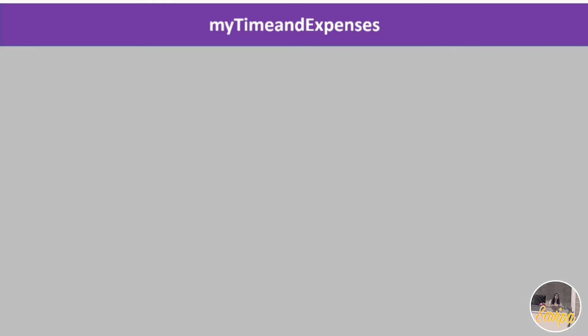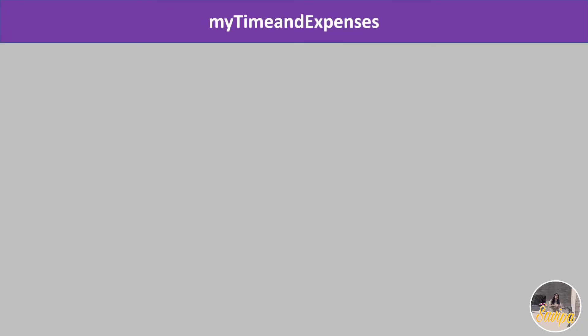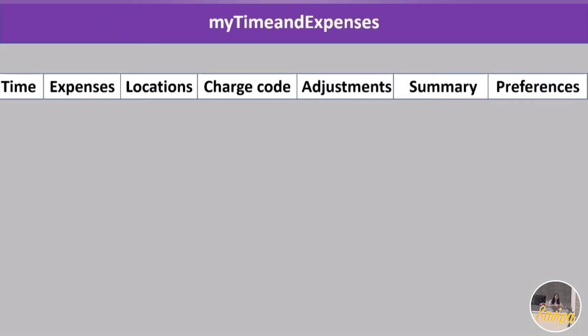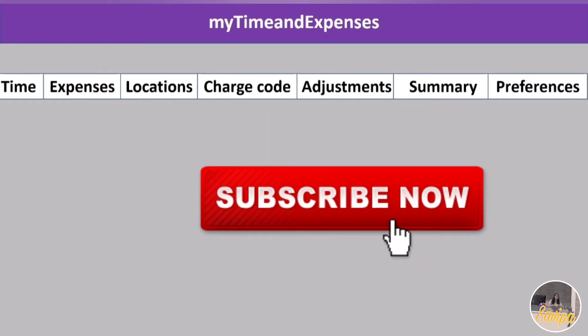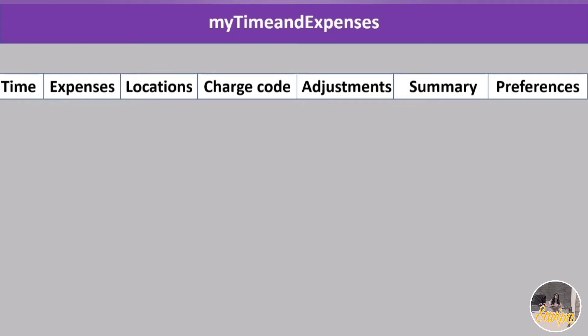In MyTE, there are important tabs you have to go through and fill. I'll give you a complete overview — what to submit, how to get your charge code, and what steps to follow in order. The tabs are: Time, Expenses, Locations, Charge Code, Adjustments, Summary, and Preferences. I'll explain how to fill each tab, so watch till the end.